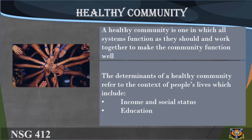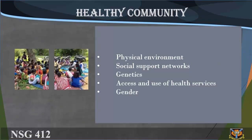The determinants of a healthy community refer to the context of people's lives, which include: 1. Income and social status; 2. Education; 3. Physical environment; 4. Social support networks; 5. Genetics; 6. Access and use of health services; 7. Gender.